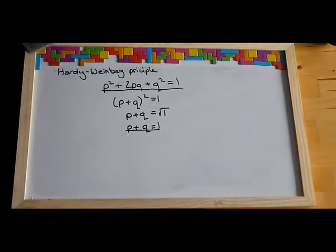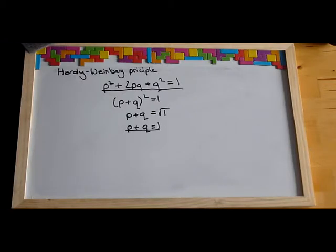The Hardy-Weinberg Principle is used to calculate the allele frequency in populations. It only works for dominant and recessive alleles and can't be used for codominant alleles. It also can't be used if the phenotype affects survival and breeding.